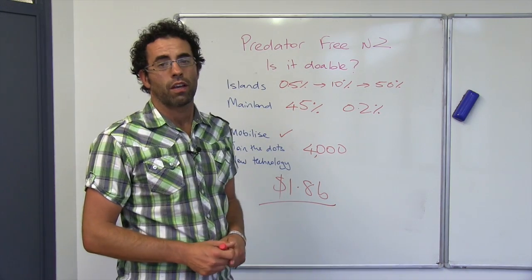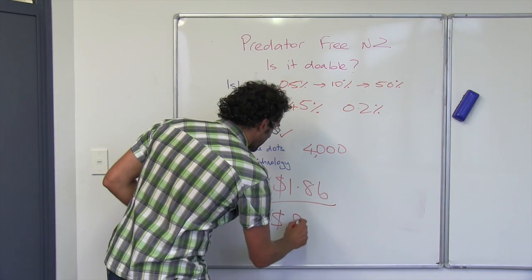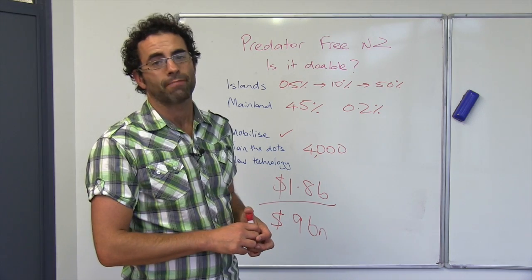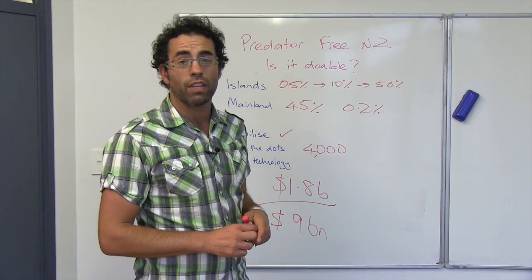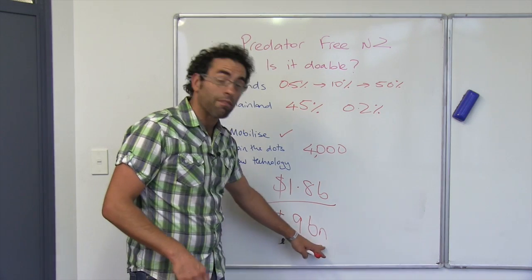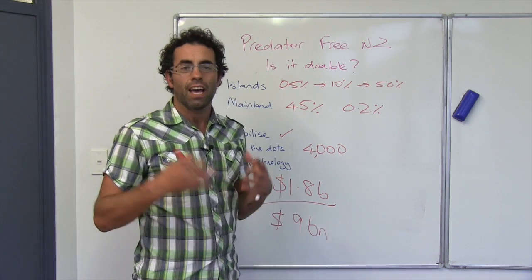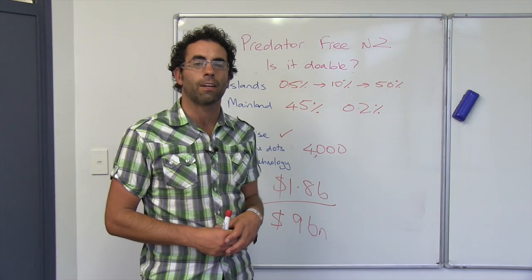The total cost of a Predator Free New Zealand, by comparison, is $9 billion. So it's only going to take five or so years, really, for the investment in a Predator Free New Zealand to be paid back just in the direct economic costs that these predators incur in our day-to-day society.